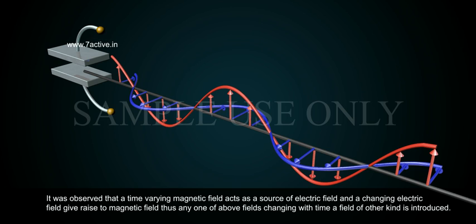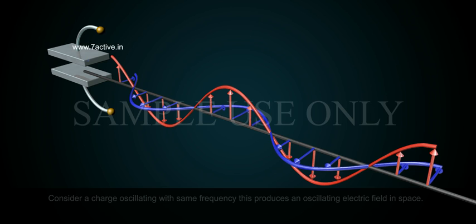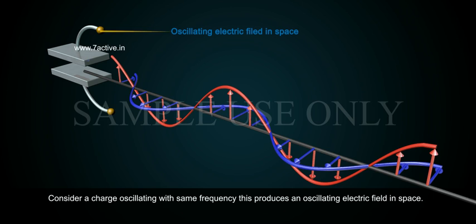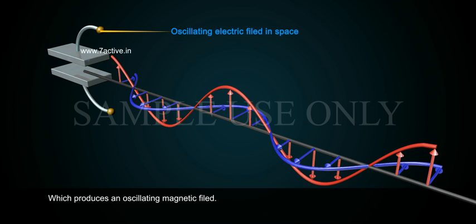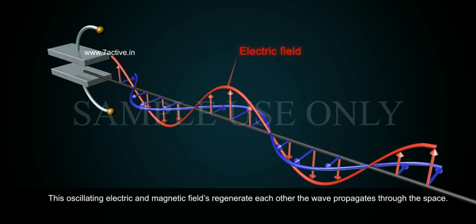Thus, any of the above fields changing with time introduces a field of other kind. Consider a charge oscillating with same frequency. This produces an oscillating electric field in space which produces an oscillating magnetic field.